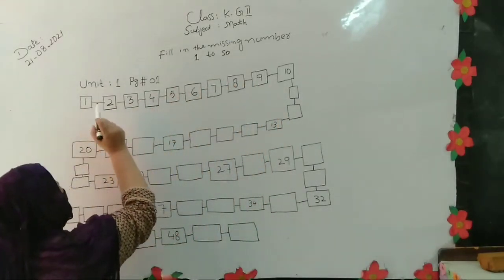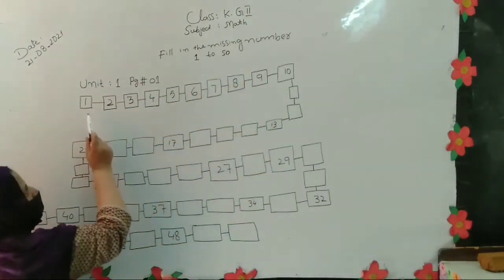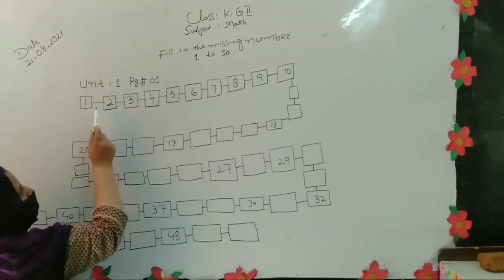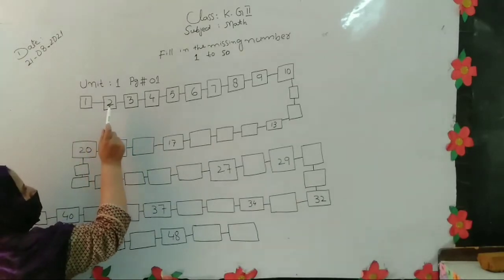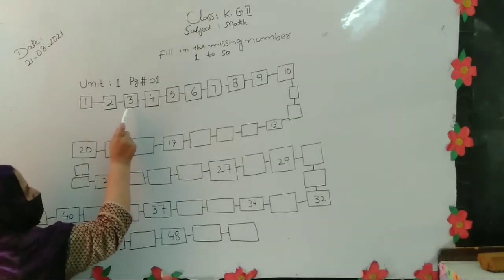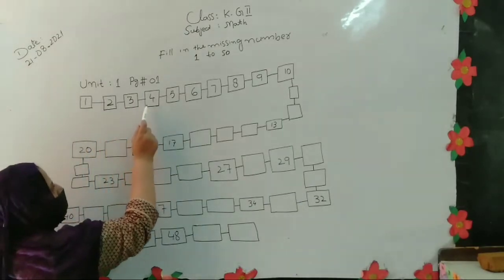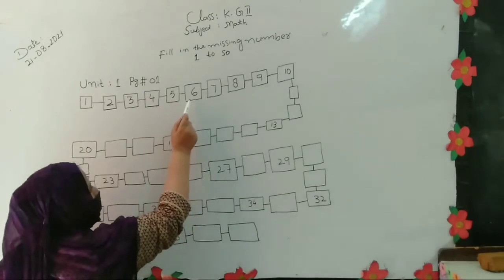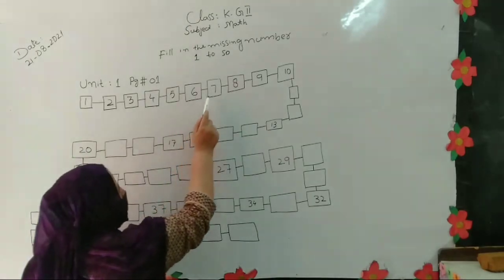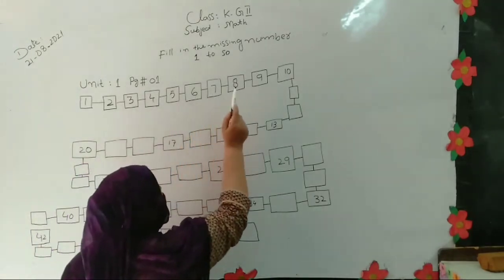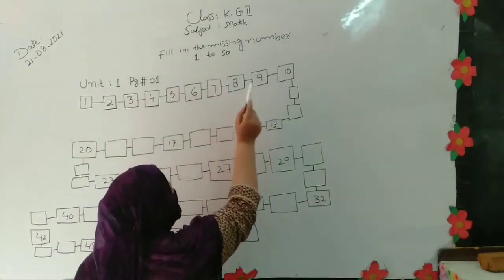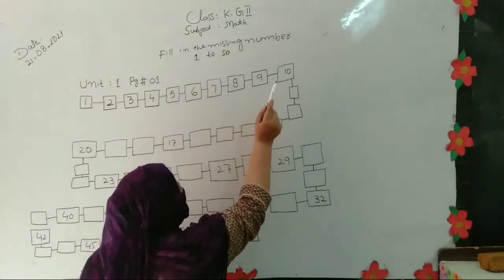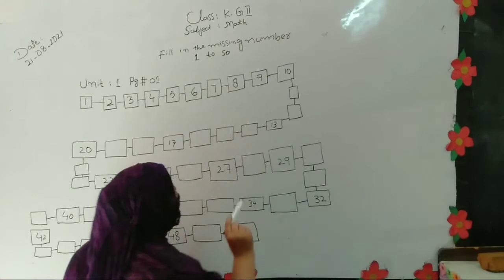After 9 comes 10. Our line 1 to 10 is now complete. Now let us read these numbers together. Read with me: 1, 2, 3, 4, 5, 6, 7, 8, 9, 10.